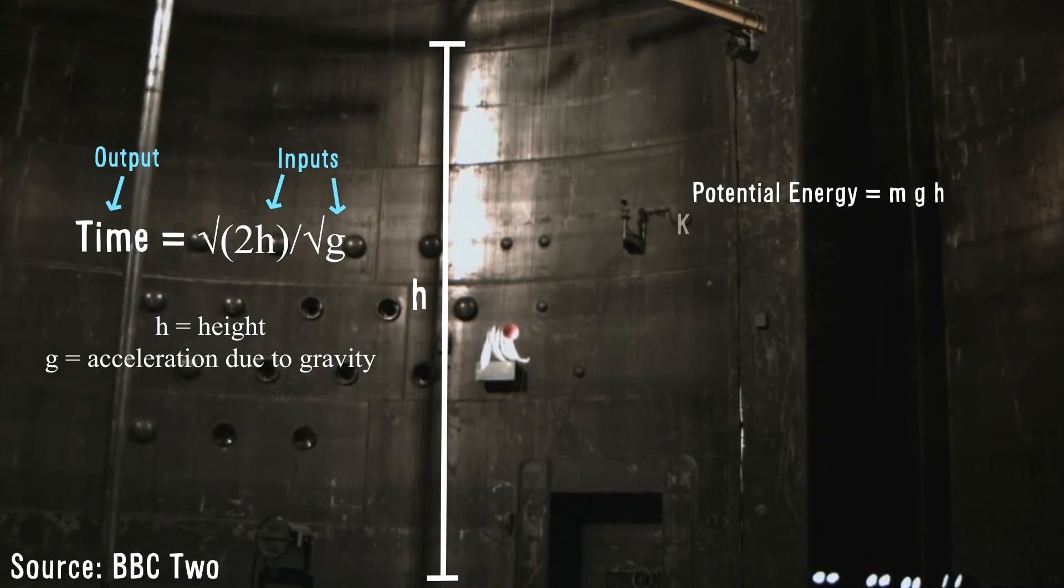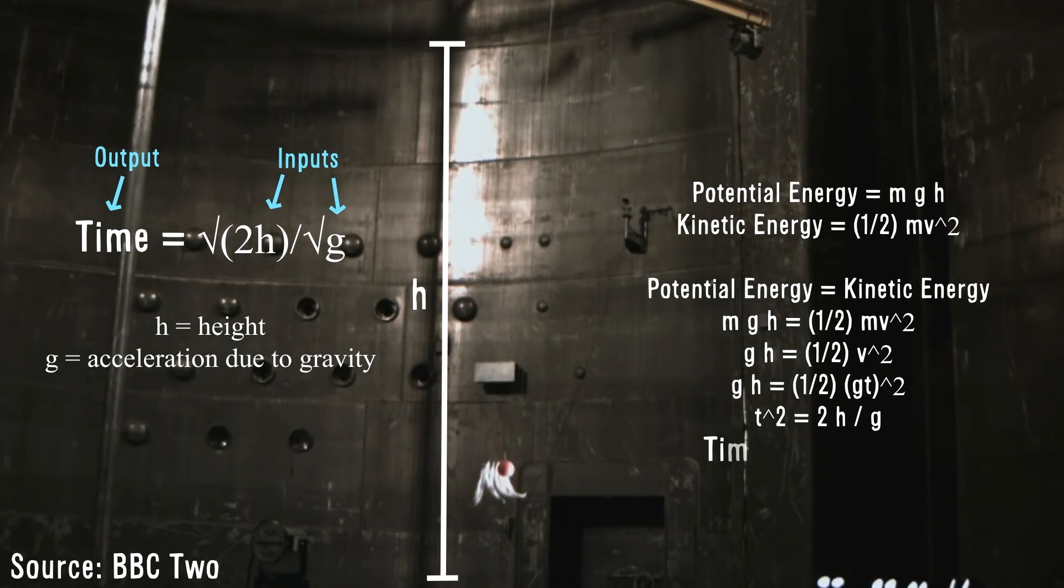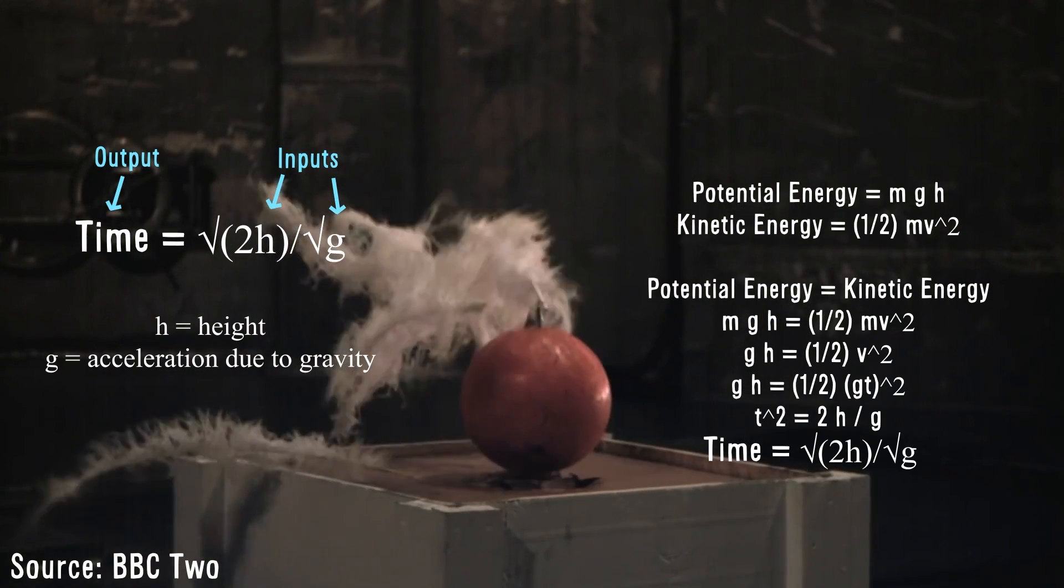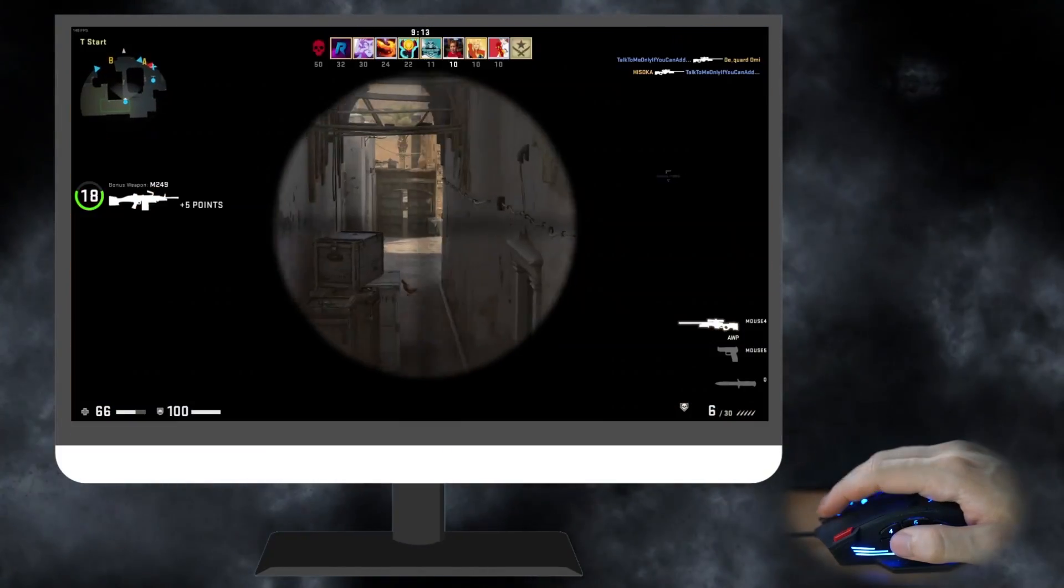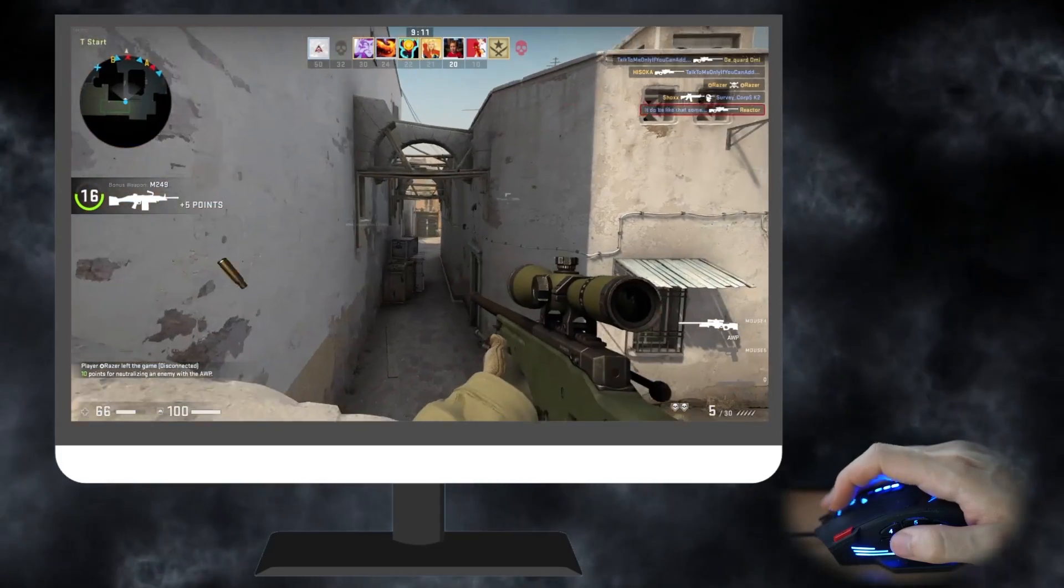Or one can say that you giving it potential energy is the input, and it falling down via kinetic energy is the output. In a computer game, you press a mouse button as an input, and your character shoots bullets as an output.